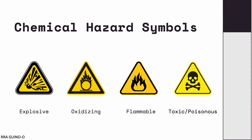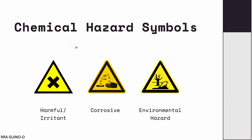Most chemical hazards have symbols indicating that they are dangerous, usually found on the container. They may have one or more of the following symbols: the symbol for an explosive substance, a symbol for an oxidizer, a symbol for a flammable substance, a symbol for a toxic and poisonous substance, symbols for harmful substances or irritants, a symbol for corrosive substances, and finally the symbol for an environmental hazard.